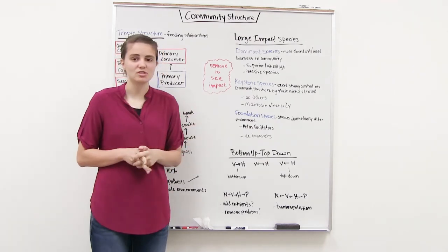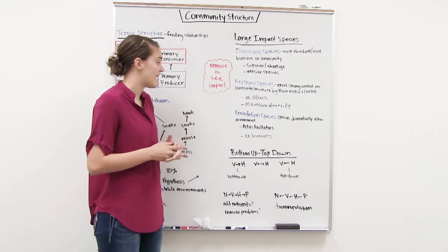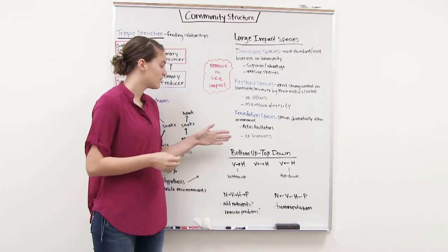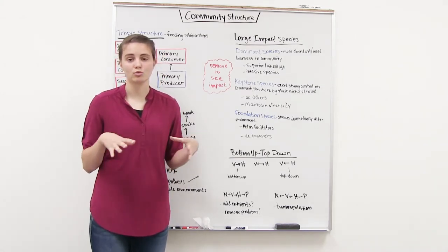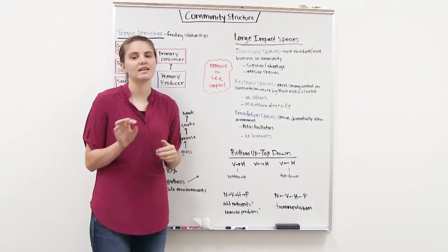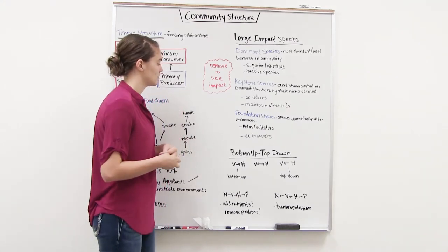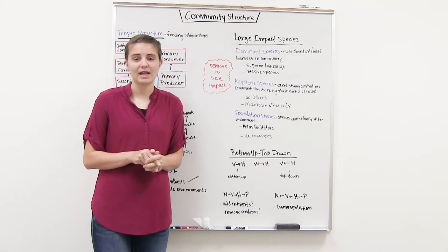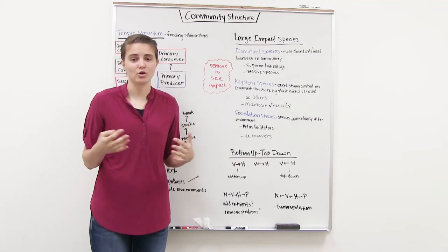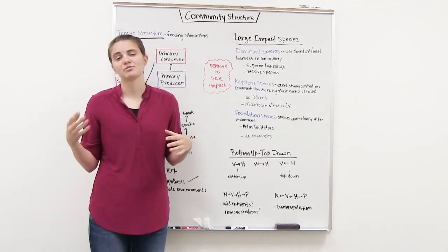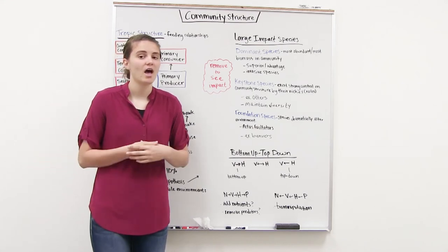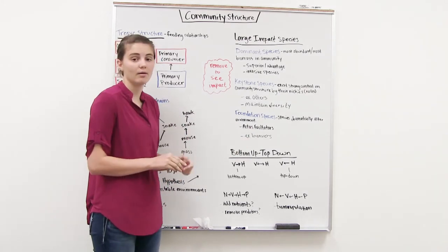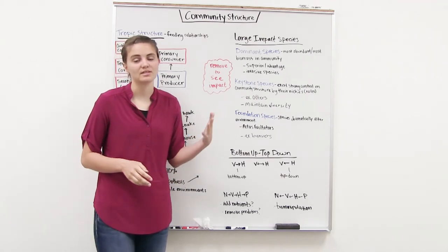The last type is foundation species — species that dramatically alter their environment, and that's how they impact the community. An example is beavers: they build dams, causing pools of water or wetlands to form, impacting other populations in the community. A lot of times these act as facilitators — plants that as they develop change the soil, facilitating other plants and organisms to reside in that area, increasing diversity.